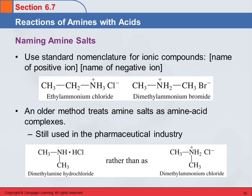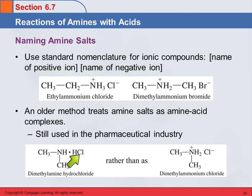There's an older method that treats these as amine-acid complexes. We need to mention this because it's still used in the pharmaceutical industry. If you look at the ingredients in your over-the-counter or prescription medicines, you'll see things like such-and-such chloride or such-and-such sulfate. They'll name this dimethyl amine hydrochloride instead of dimethyl ammonium chloride — they're looking at it as an amine complexing with the acid, rather than forming an ionic compound.